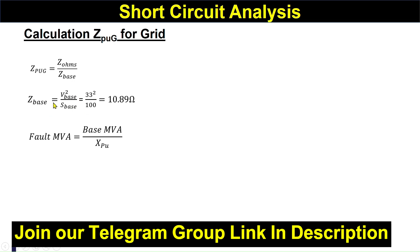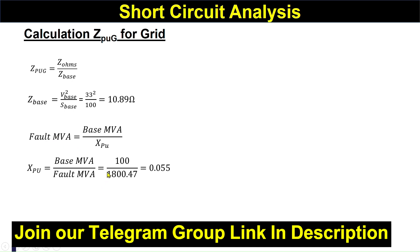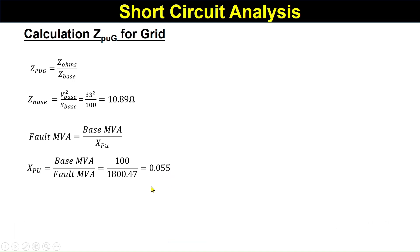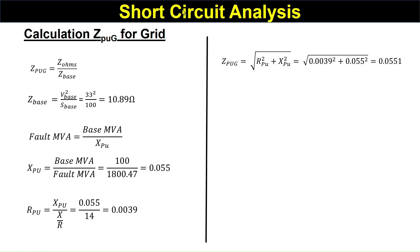The fault MVA equals the base MVA divided by X per unit, so X per unit equals base MVA divided by fault MVA. With base MVA of 100 and fault MVA of 1800.47, X per unit becomes 0.055 ohm. Then R per unit equals X per unit divided by the X/R ratio. With X per unit of 0.055 and grid X/R ratio of 14, R per unit becomes approximately 0.0039.